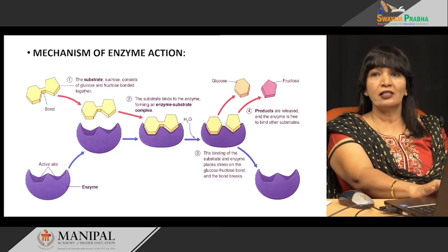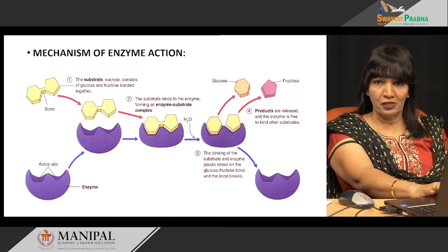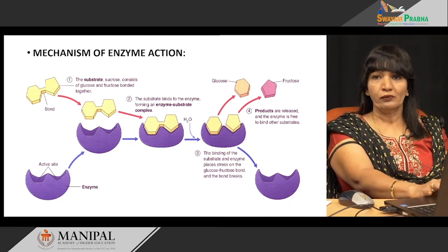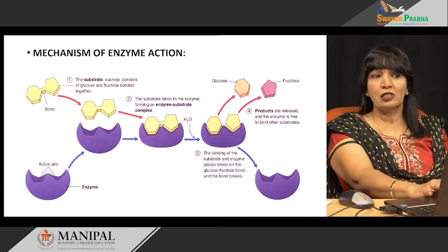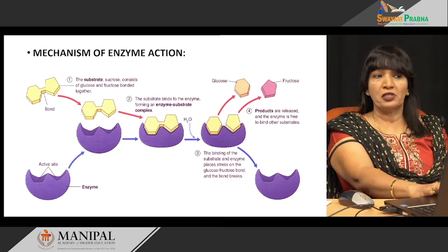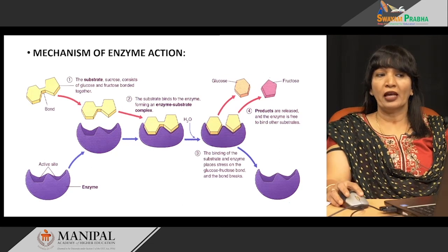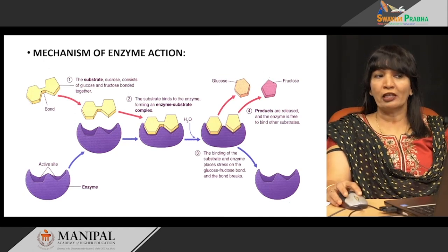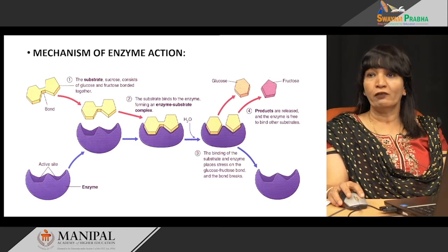For example, I have a substrate which is sucrose, made up of two components — glucose and fructose — joined together by a glycosidic linkage. This substrate will come and bind to the enzyme at the active site, forming what is called the enzyme-substrate complex. You can see here the blue one is the enzyme, with a small cleft designated as the active site, and sucrose exactly comes and fits into it.